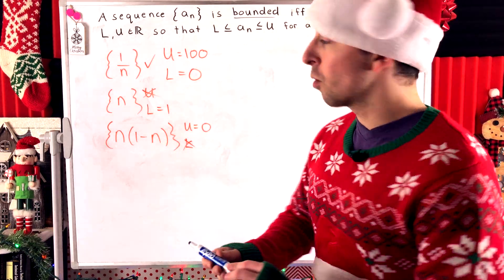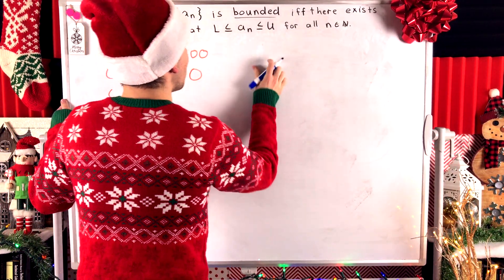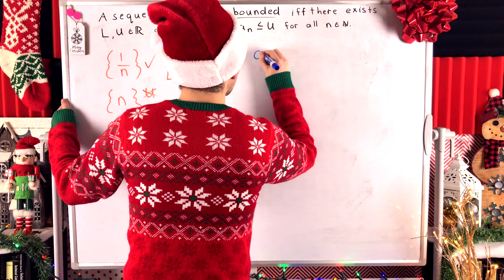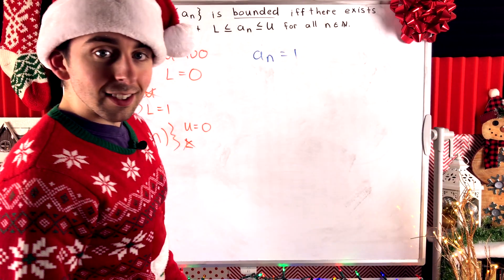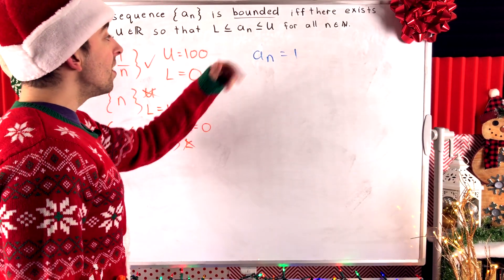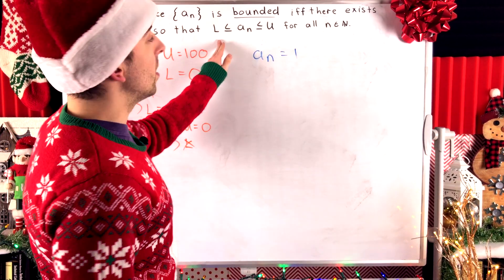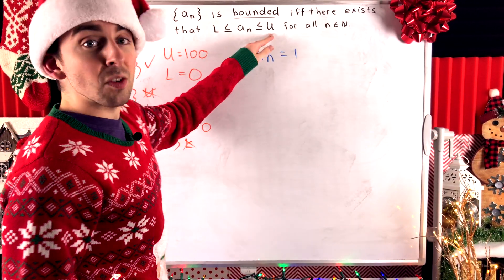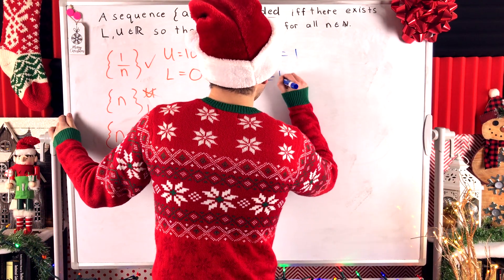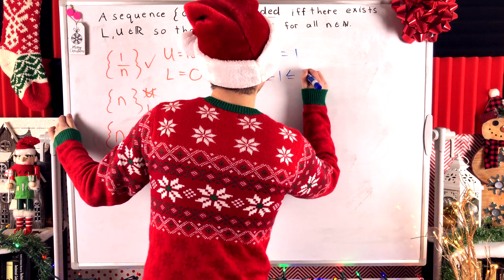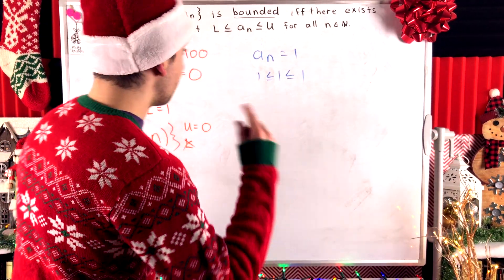Let me show a quick example of that. Consider the constant sequence aₙ = 1, so every term of this sequence is one. This is a bounded sequence: one is a lower bound and one is an upper bound, since one is less than or equal to one which is less than or equal to one. Kind of a funny example where the lower and upper bounds are the same.